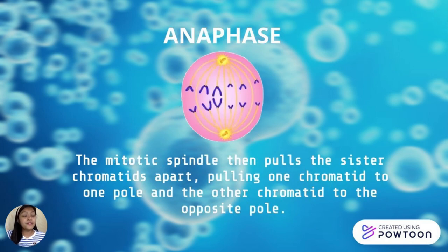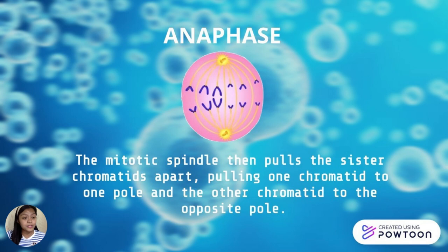Next, we have anaphase. The mitotic spindle then pulls the sister chromatids apart, pulling one chromatid to one pole and the other chromatid to the opposite pole.